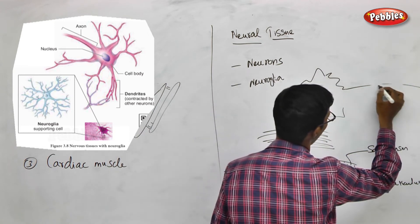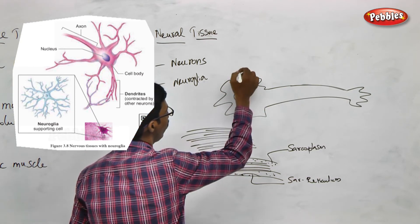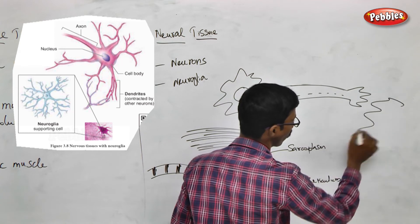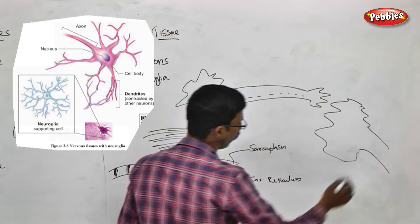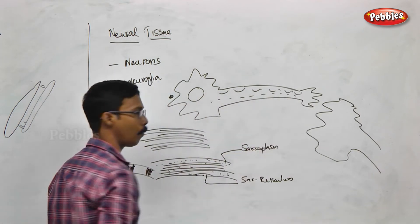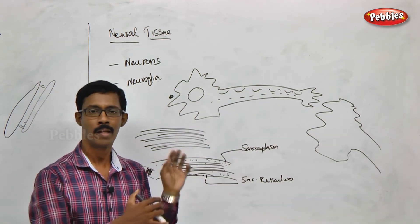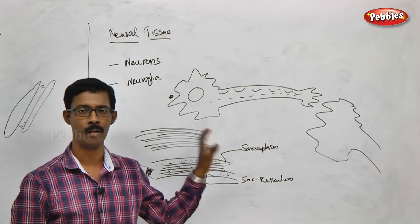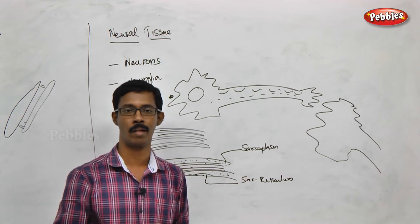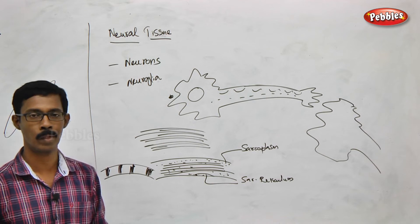Neurons are the major functional units of the entire nervous system. A neuron has one head region with dendrites, one elongated body, and a tail region. There is a large nucleus in the body. Neurons conduct information from one place to another through electrical pulses at very high speed. The entire animal body is coordinated and controlled by the nervous system through neurons.